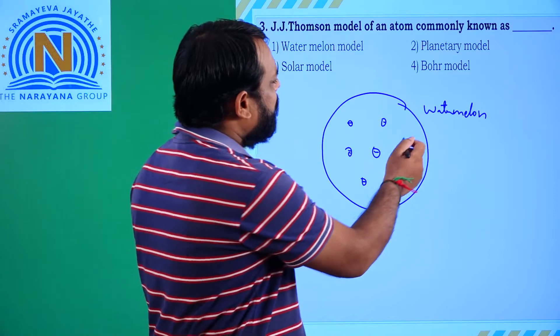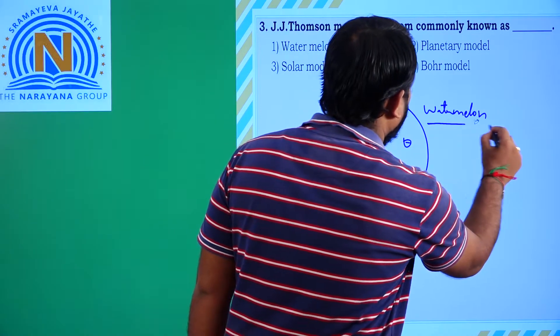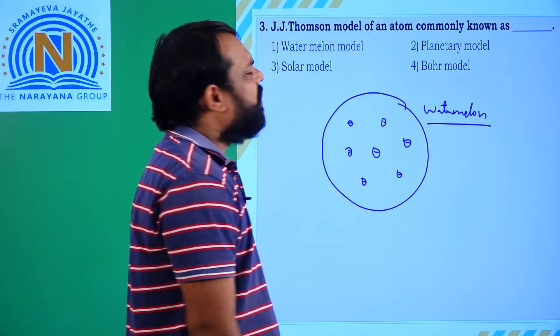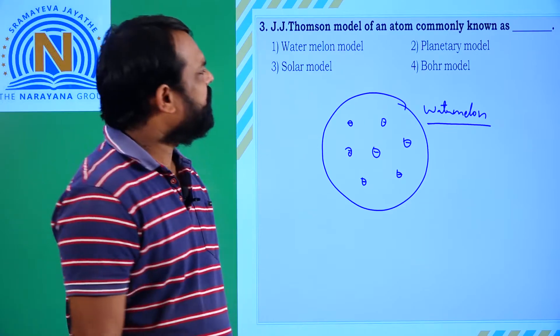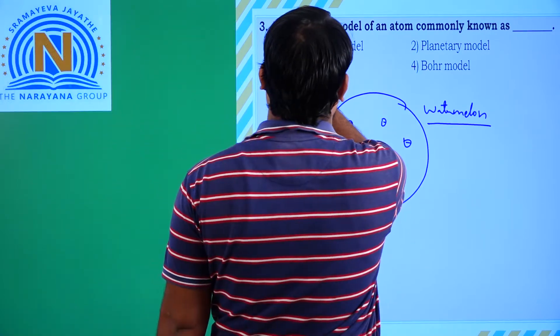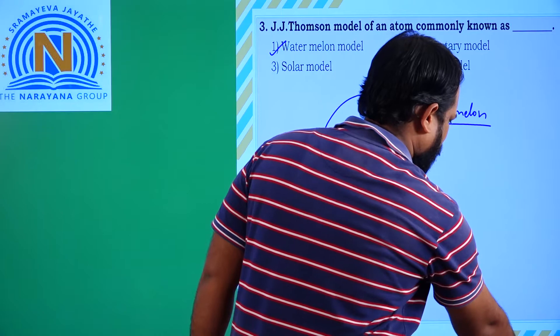So J.J. Thomson's model is called the watermelon model. The first option is correct.